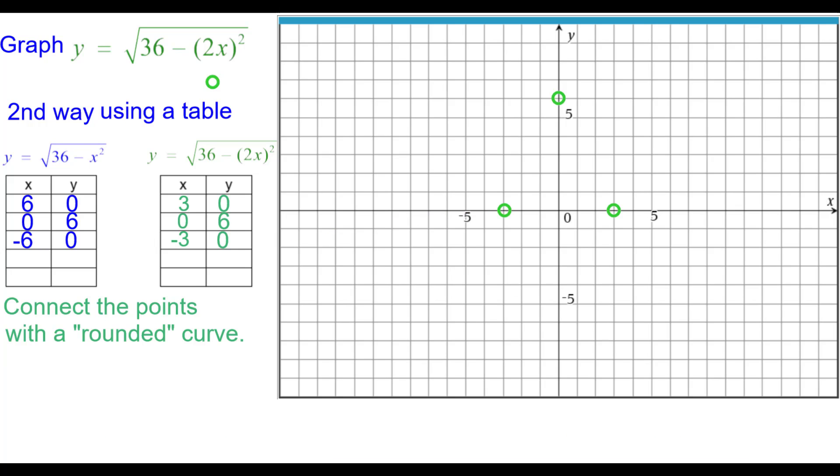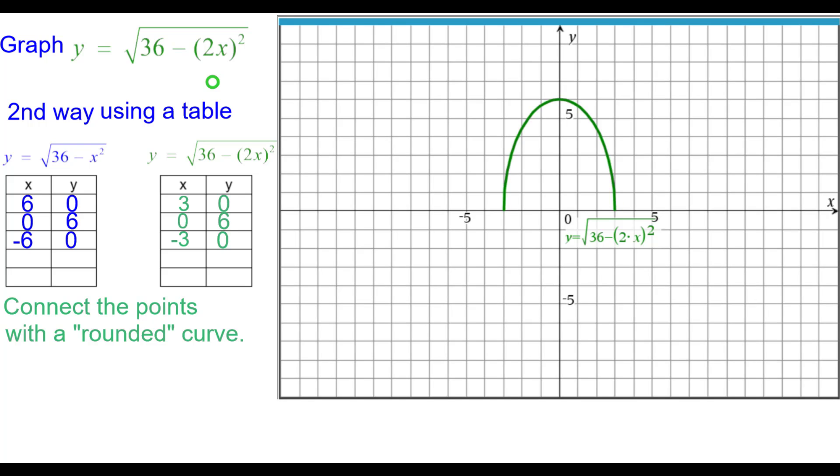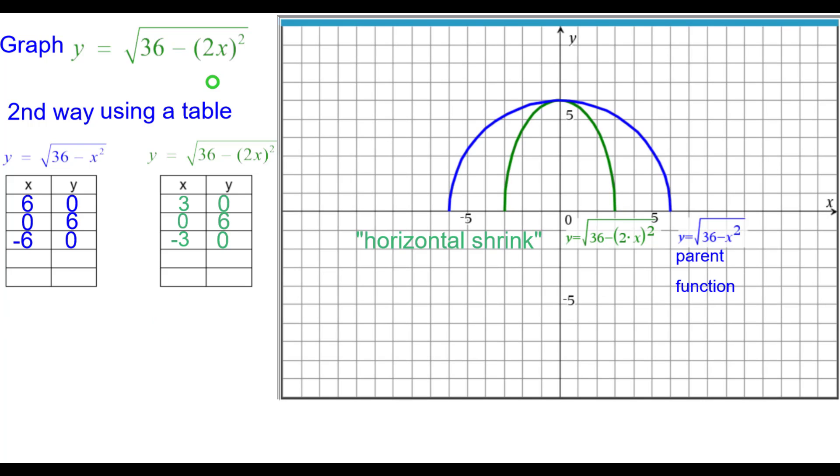Connect the points with a rounded curve. And we'll compare this to the parent function. And you can see again that from blue to green is a horizontal shrink.